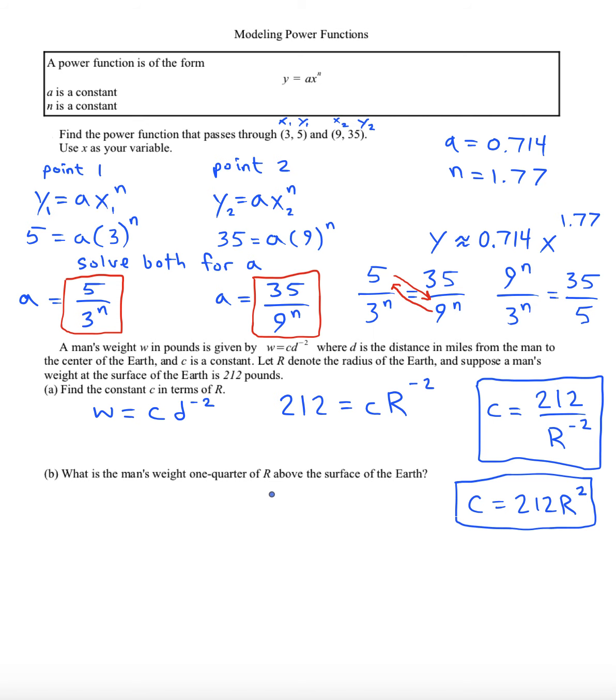Now it says what is the man's weight one quarter of r above the earth's surface. If you're standing on earth's surface then you're a distance r from the center, and that's actually the distance that matters when calculating the weight. If you go a quarter of r above the earth's surface, you are here, but that would be a total distance of the sum of those two, which would be five fourths r. That's by adding one fourth plus four fourths to get five fourths.